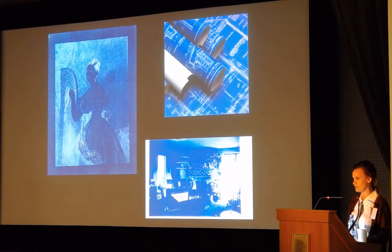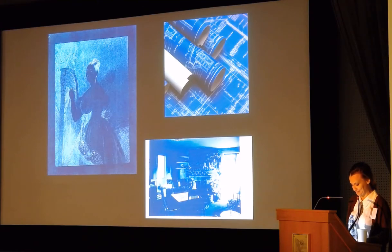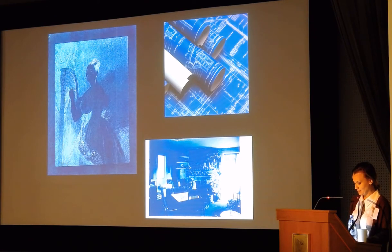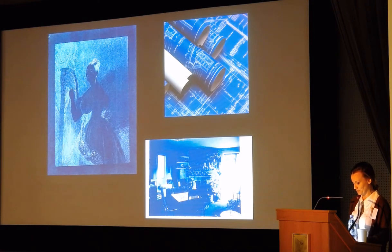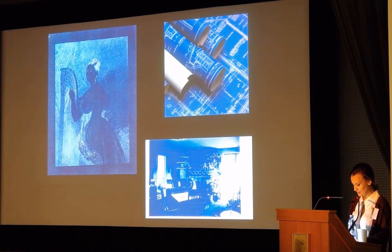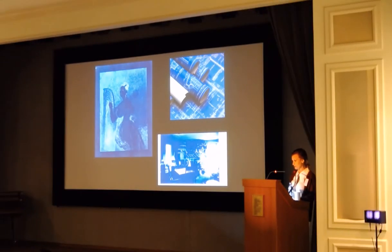Cyanotype and its main processes were used by engineers and architects to copy drawings, layouts, and diagrams — this was like the golden era of cyanotype. In 1872, the first cyanotype paper was manufactured in France. In 1875, students of Massachusetts Technological University were officially told to use cyanotype to copy drawings, and in 1876 in Philadelphia, the first machine for cyanotype printing, made in Switzerland, was exhibited.